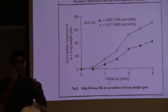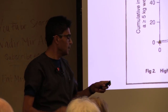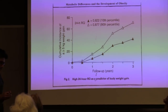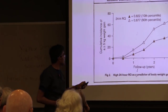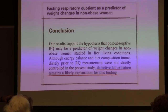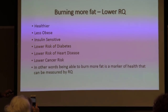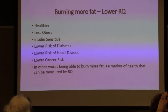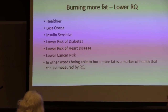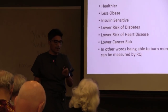If you are burning zero carbs and mostly fat, your respiratory quotient would be 0.7; as you burn more sugar it approaches 1. In a study comparing two individuals, the person burning more fat was at a lower weight compared to the person burning sugar at three years down the road. Defective fat oxidation remains a likely explanation for why people gain weight. A lower RQ means you're fat-burning, and that correlates with less obesity, insulin sensitivity, lower diabetes risk, lower heart disease risk, and lower cancer risk.